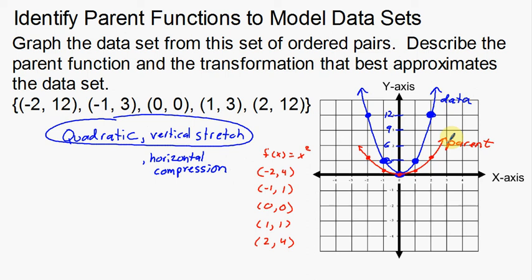That's a quick example of using a data set to model a parent function — identifying the parent function and then describing the transformation from the parent function to the data set.